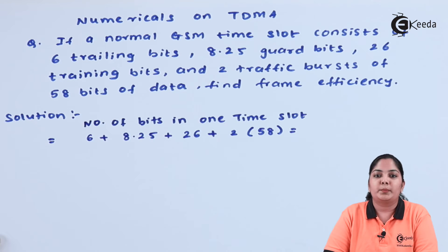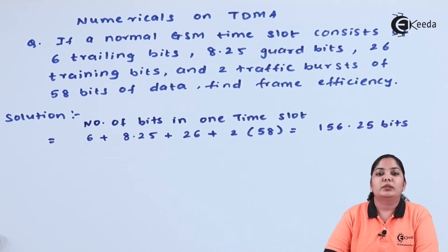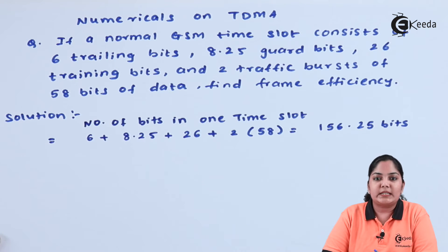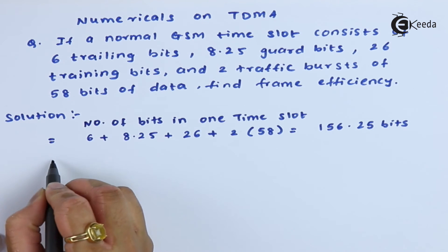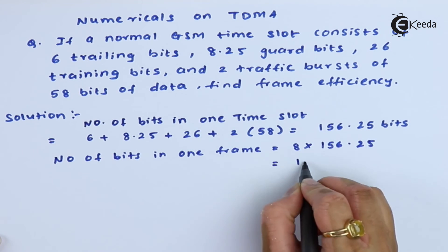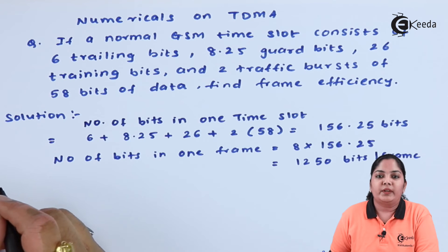Since we have two data bursts, I have multiplied by 2. The answer is 156.25 bits in one time slot. Now we find the total bits in an entire frame. Since GSM uses TDMA with 8 users per frame, and one time slot has 156.25 bits, we multiply by 8, giving 1250 bits per frame.